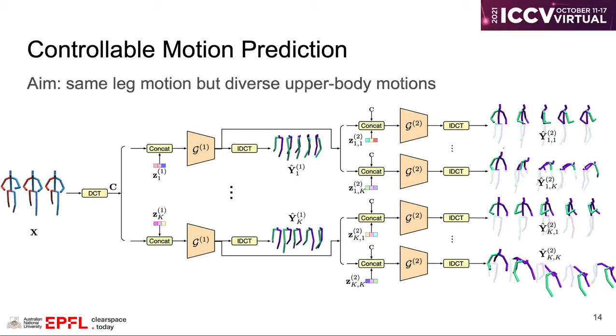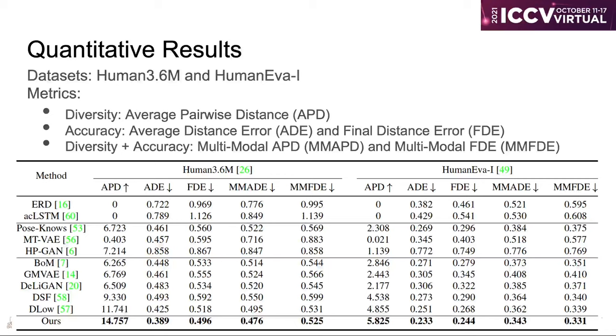And the diversity loss is computed for each body part separately. During testing, we can sample one random code for a single leg motion and then multiple random codes to predict diverse upper-body motions with the same leg motion.